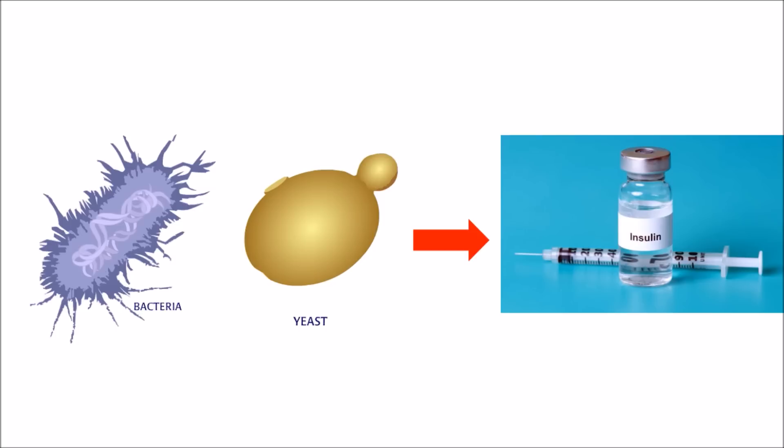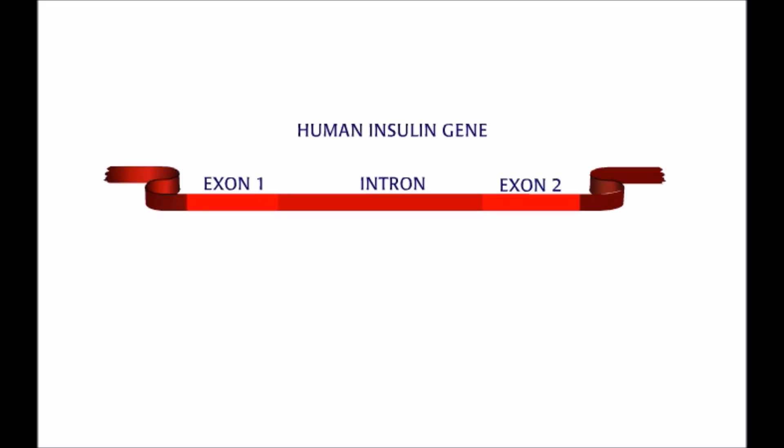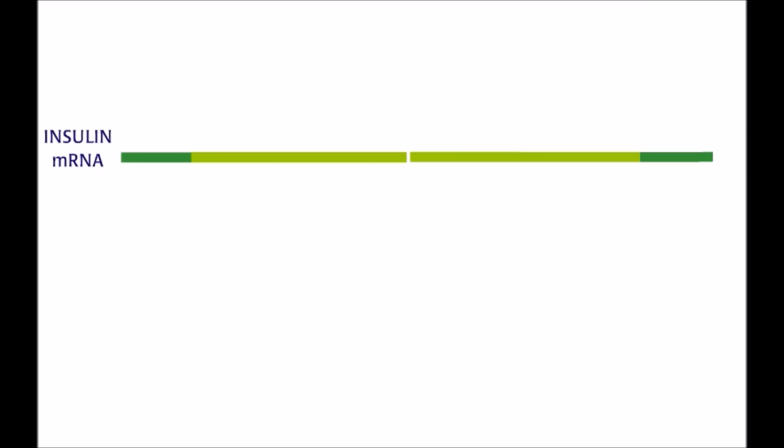Synthetic insulin is made in both bacteria and yeast. In order to get bacteria to make insulin, a number of factors need to be considered. Genes in eukaryotes have introns. Bacteria do not have introns in their genes, and so they do not have biochemical machinery to remove introns.